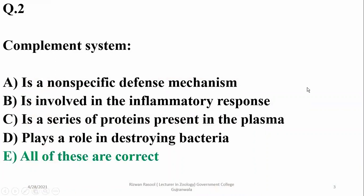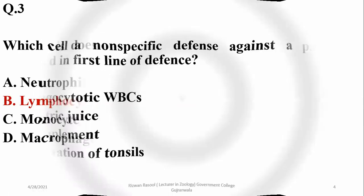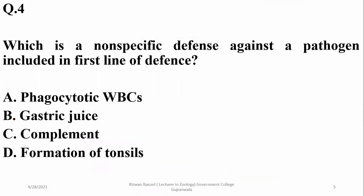All of these are correct options for the complement system in the body. Which of the cells does not phagocytize? Lymphocytes are the cells which are not involved in phagocytosis. Instead, they produce B and T lymphocytes for cell-mediated or humoral response. Non-specific responses in the first line of defense include production of gastric juice.